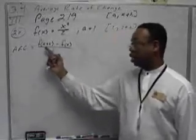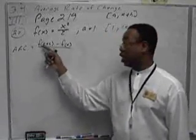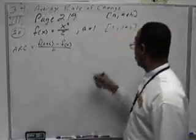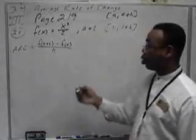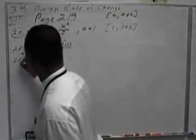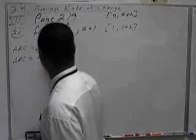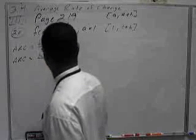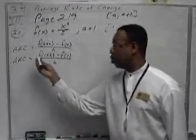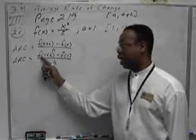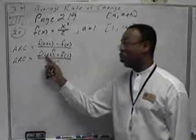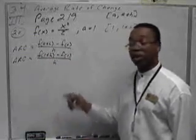This time, we're going to use the formula that includes the A and the H, which is F of A plus H minus F of A over H. We know that A is being used for 1, so we're going to replace that. And now, it's a matter of finding what F of 1 plus H looks like, and also knowing what F of 1 looks like.